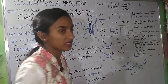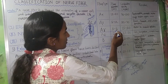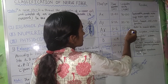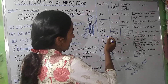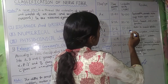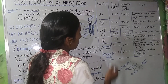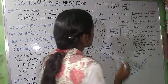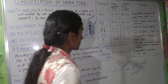For A-gamma, the fiber diameter is 3–6 micrometers and the conduction velocity is 15–30 meters per second. For A-delta, the fiber diameter is 2–5 micrometers and the conduction velocity is 12–30 meters per second. For B fiber, the fiber diameter is less than 3 micrometers and the conduction velocity is 3–15 meters per second.